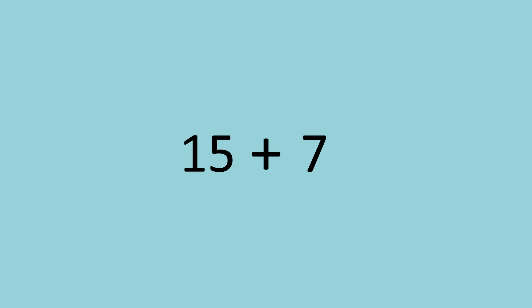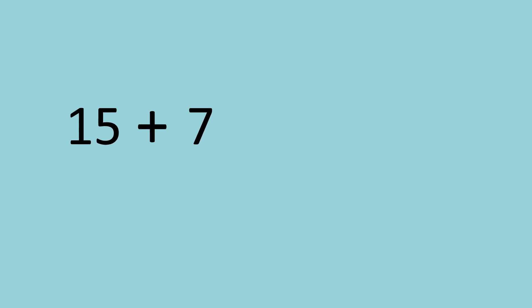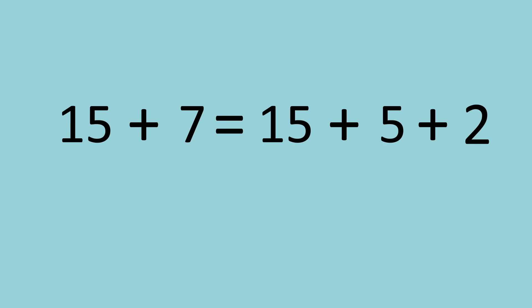Say we have 15 plus 7. First, we will make 15 become 20 to complete the tens by breaking apart 7 into 5 plus 2. So 15 plus 5 is equal to 20 and then we bring down plus 2.